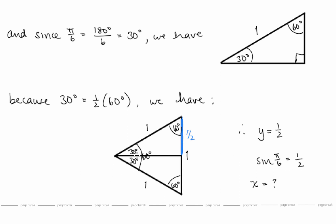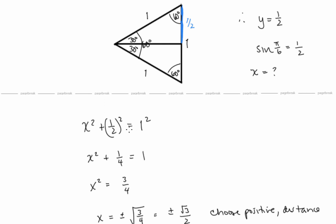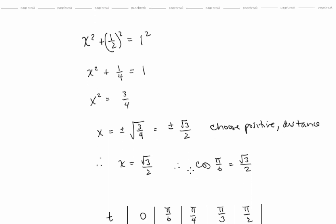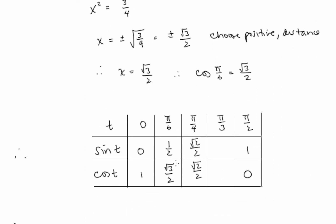Now what is x — that horizontal distance? Using the Pythagorean theorem: x squared plus (1/2) squared equals 1 squared, so x squared plus 1/4 equals 1, and x squared equals 3/4. Taking the square root: x equals positive or negative radical 3 over 2. Since x is a distance, we choose the positive value, so x equals radical 3 over 2. That tells us cosine of π/6 is radical 3 over 2.